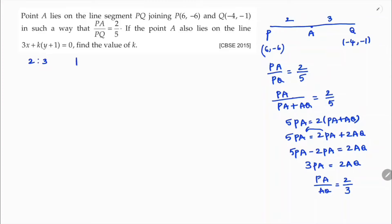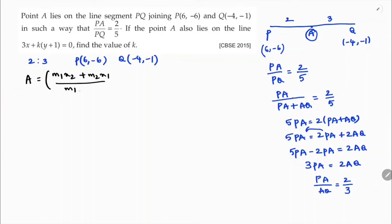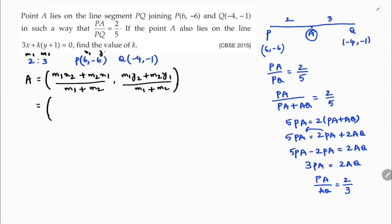The ratio is 2:3, P is (6, -6) and Q is (-4, -1). Now I'll find the point A using the section formula. The section formula is: x = (m1·x2 + m2·x1) / (m1 + m2), y = (m1·y2 + m2·y1) / (m1 + m2).